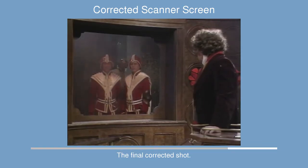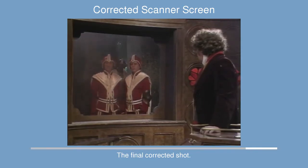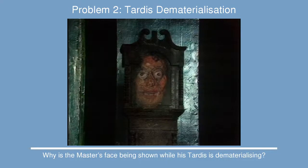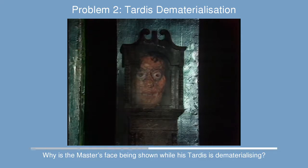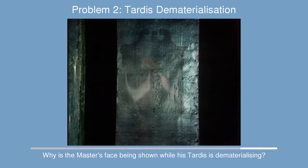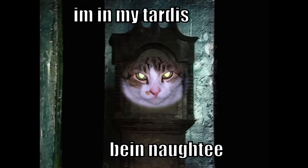The second issue is the dematerialization of the Master's TARDIS. If you look at the Master's TARDIS dematerializing, you can see the problem — we've got the Master's face superimposed there. I mean, what was the director thinking? We might as well have a lolcat there or something; it doesn't look right and it's got to be fixed.